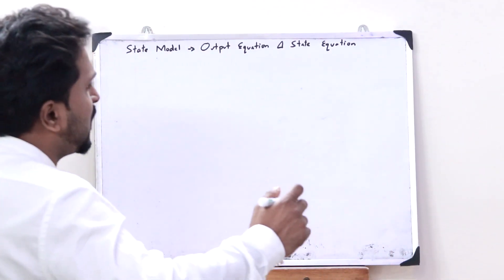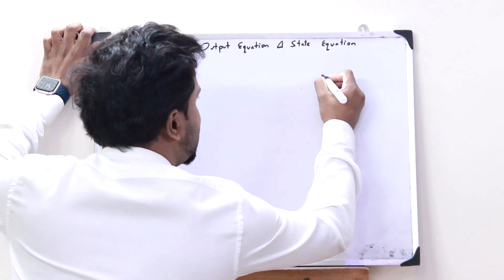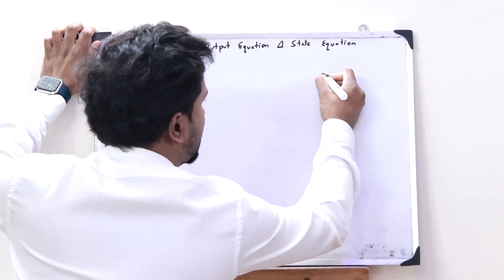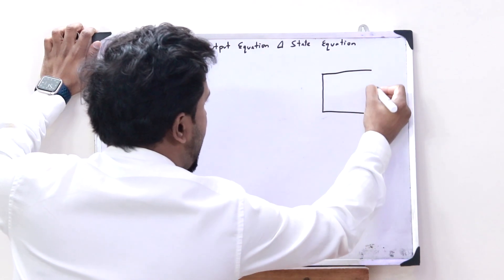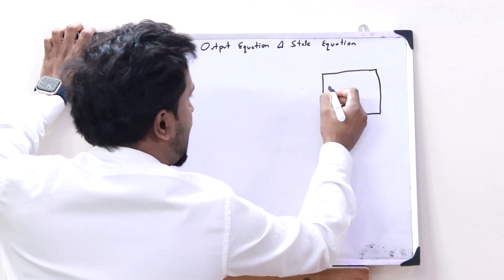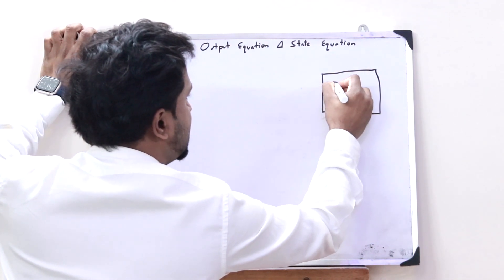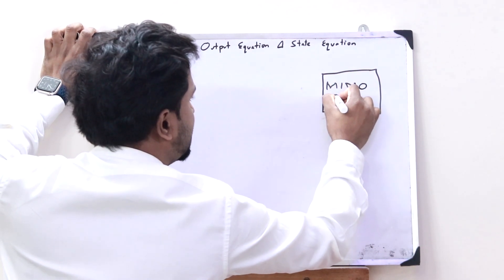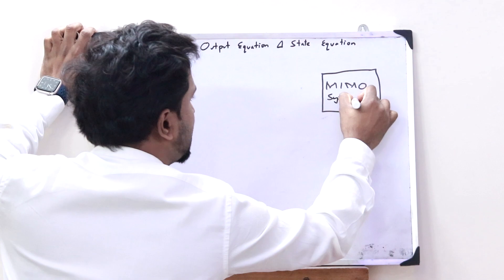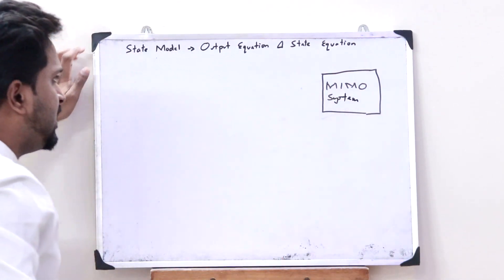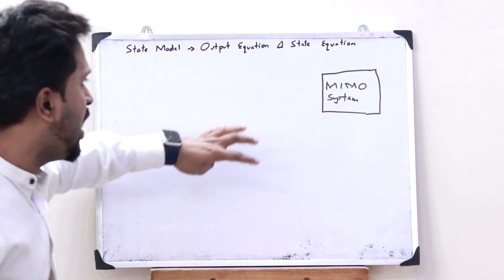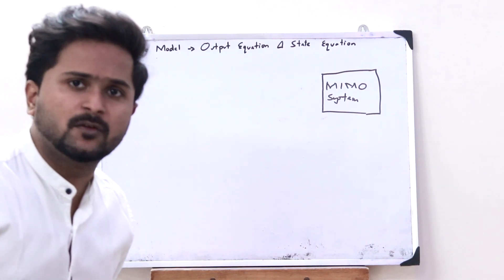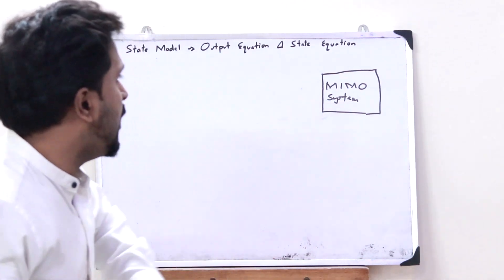Let us consider a particular multi-input, multi-output system — an MIMO. The speciality of a multi-input, multi-output system is that multiple inputs can be given to the system to obtain multiple outputs.